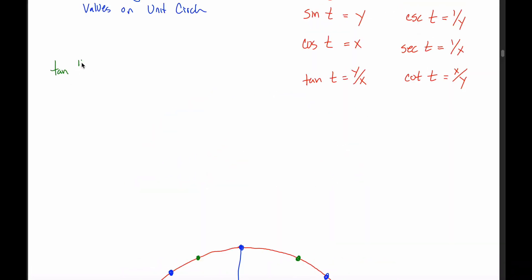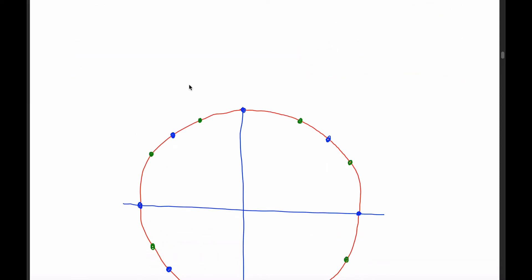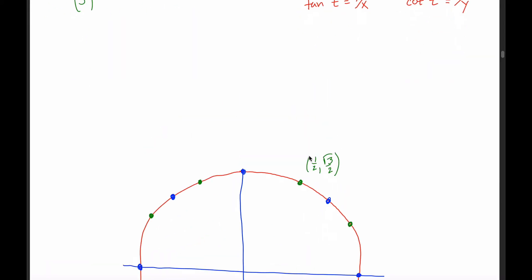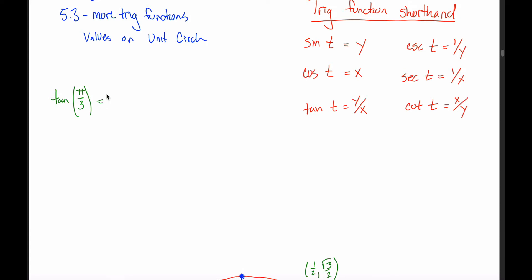For example, maybe I'd ask you for tangent of π/3. The point π/3 has an x-coordinate of 1/2 and a y-coordinate of √3/2. Tangent is just the y-coordinate divided by the x-coordinate, so it's (√3/2) ÷ (1/2). Multiplying by the reciprocal of the denominator, the 2s cancel out, giving us the tangent of π/3 equals the square root of 3.